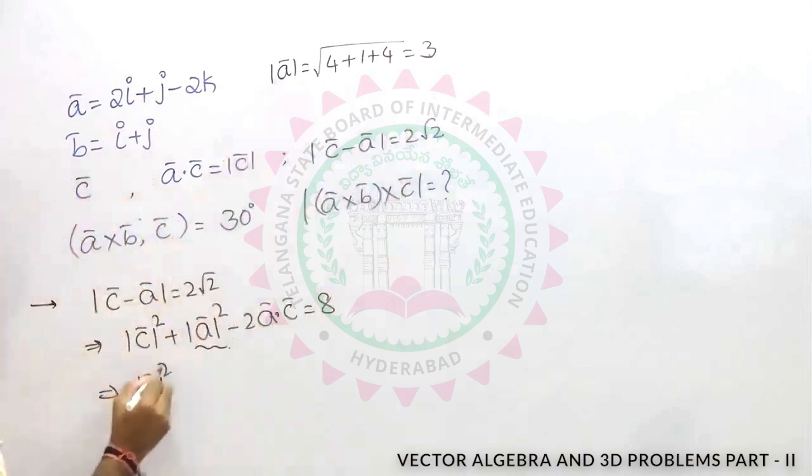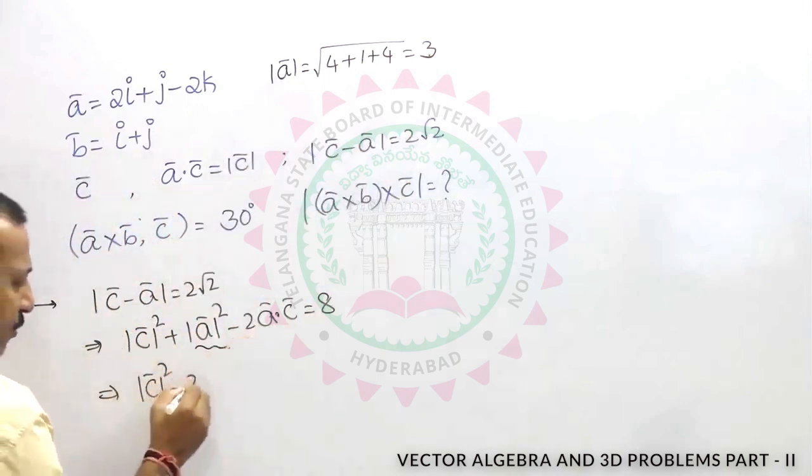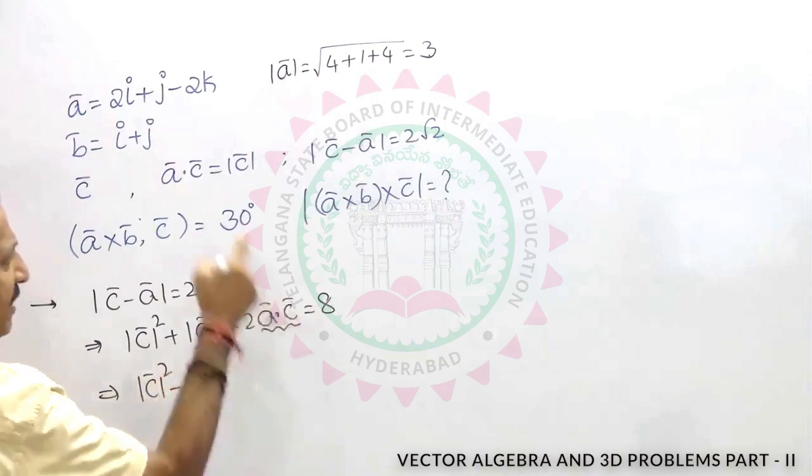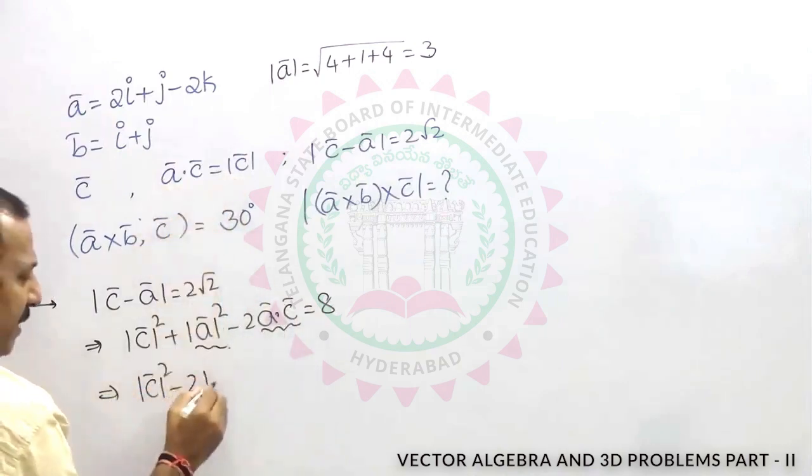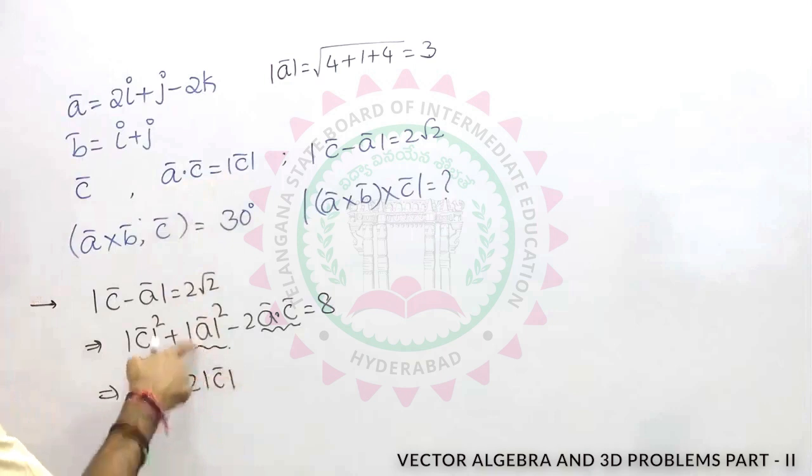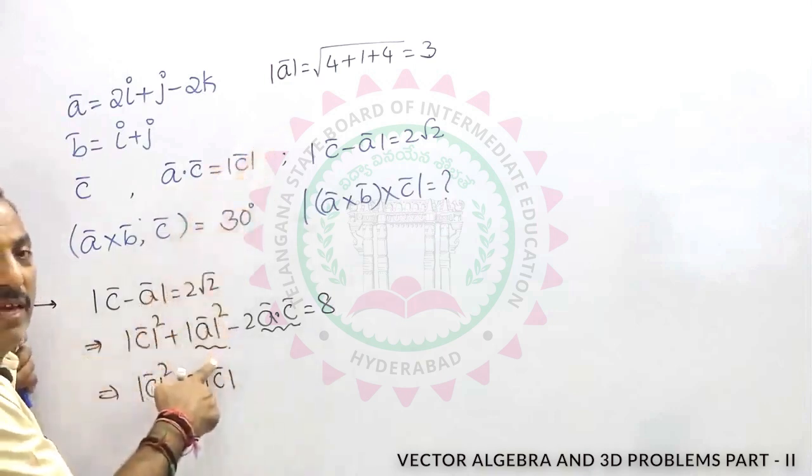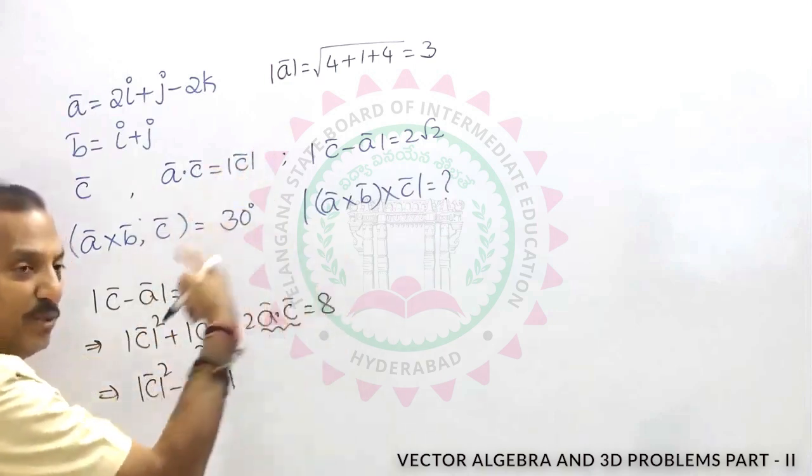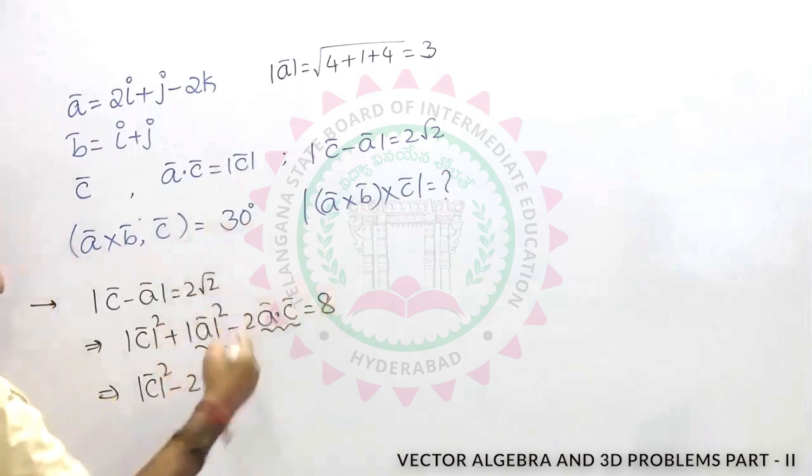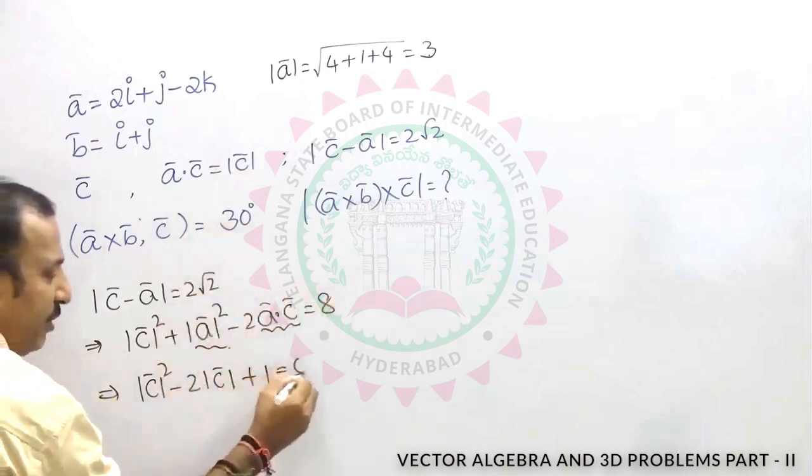What is a dot c? A dot c is nothing but mod c. Mod a is 3, mod a square is 9. Take this 8 to the left hand side, 9 minus 8 plus 1 is equal to 0.